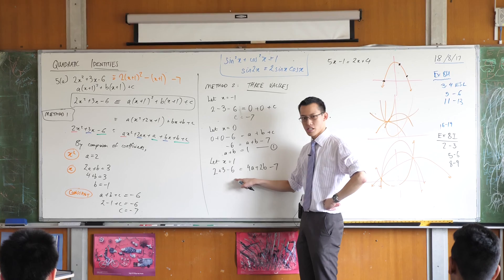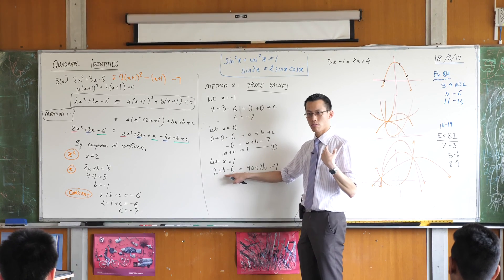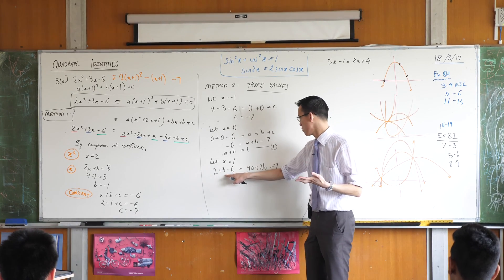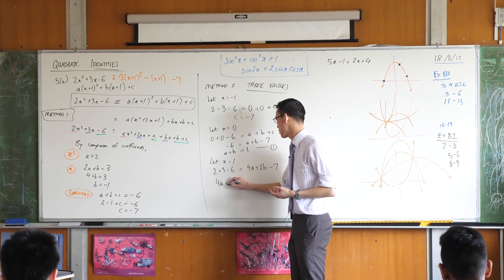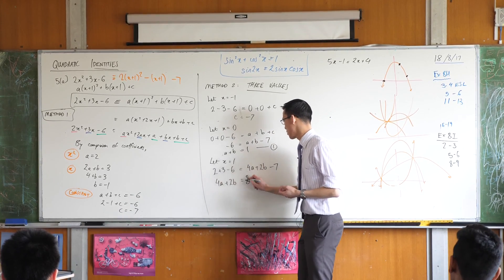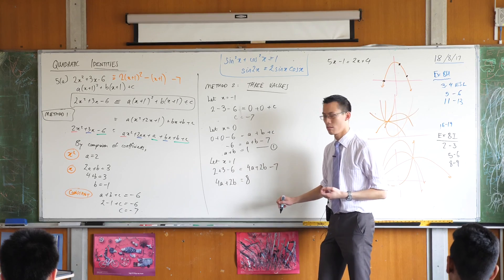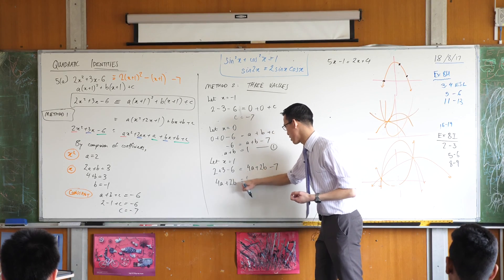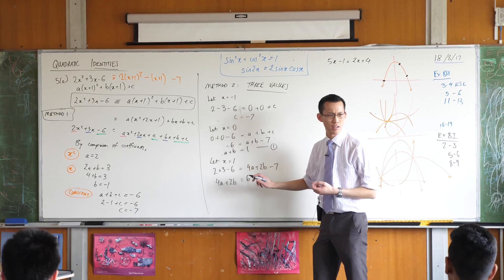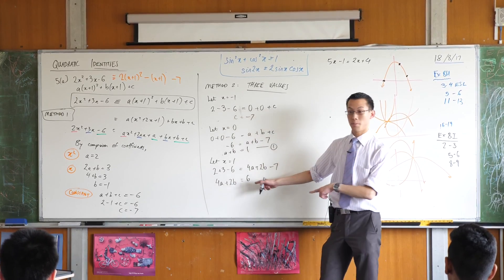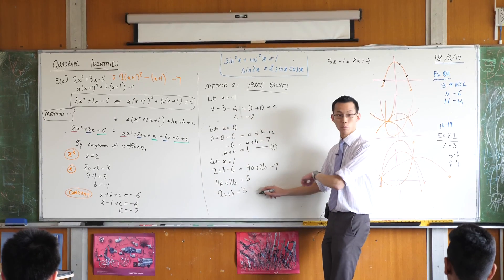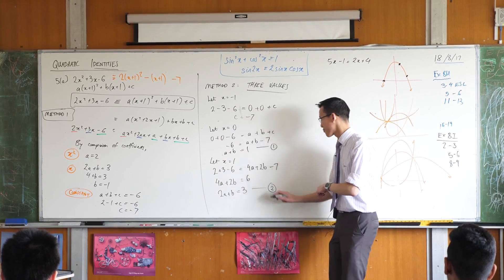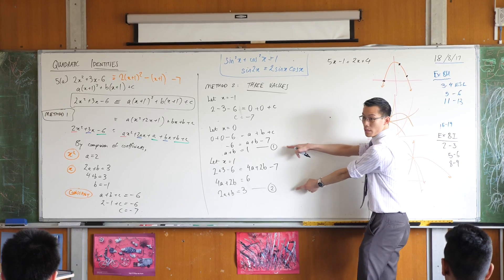Two plus three minus six. That's five minus six, which is negative one. I'm going to add seven to both sides. So that gives me this. So that should be a six, shouldn't it? I can simplify that. Two a plus b. That looks pretty good. I think that's ready.